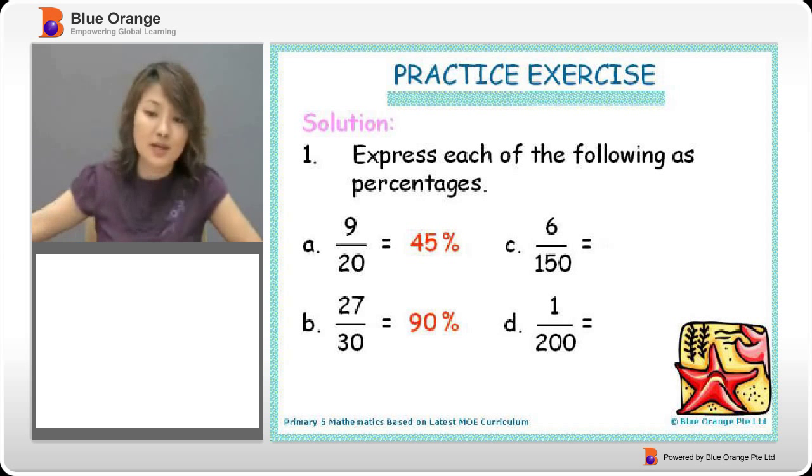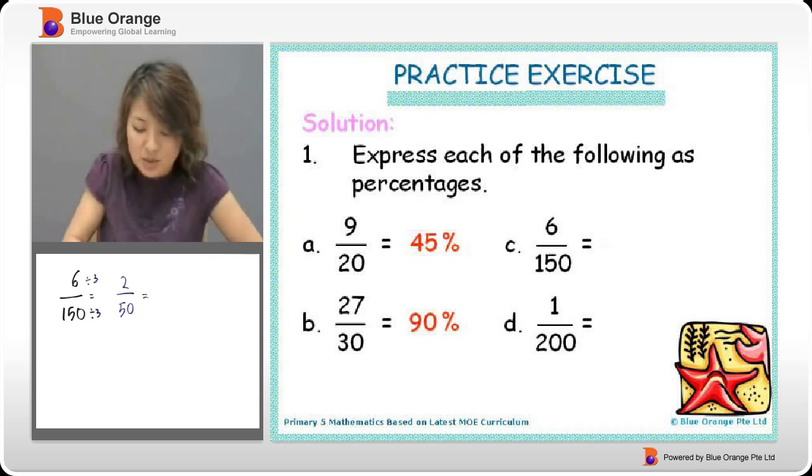Let's look at question 1C. 6 over 150. Trying to make it to 100 is a little bit difficult, because 150 to make it to 100 is difficult. So we reduce it. We can reduce it by dividing by 3. We'll have 2 over 50. And here, we can make it into 100.